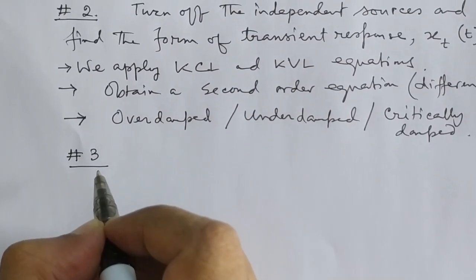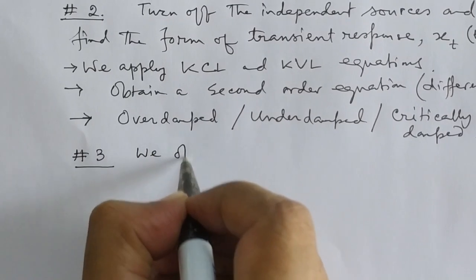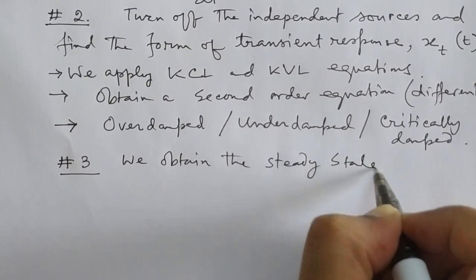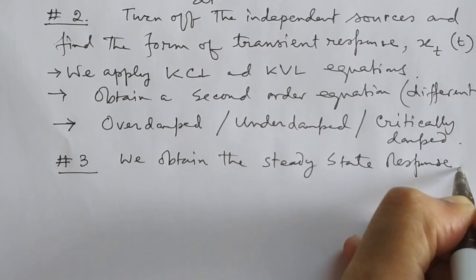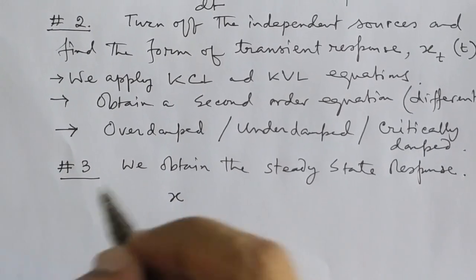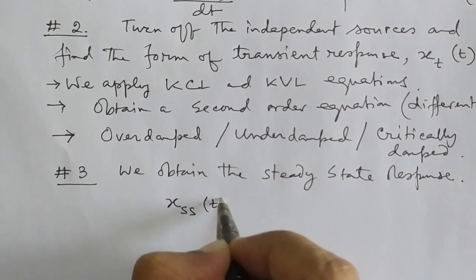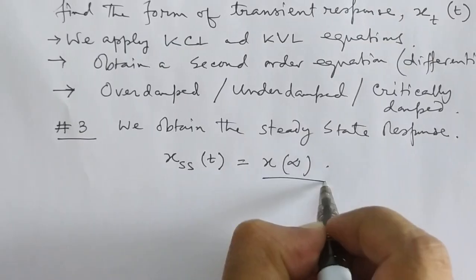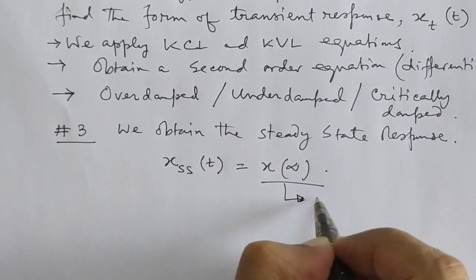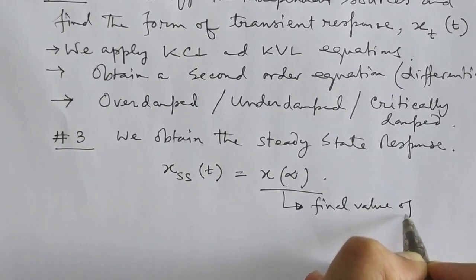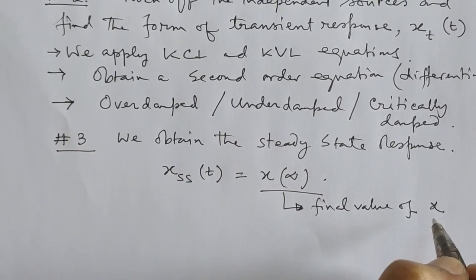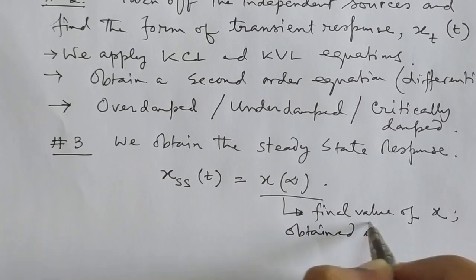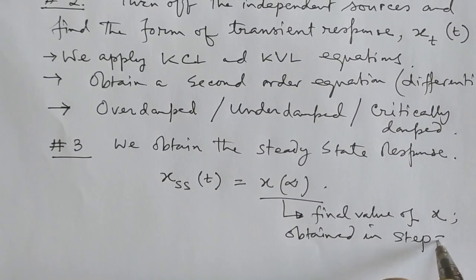In step three, we obtain the steady-state response. We denote the steady-state response by X subscript SS as a function of T, which is equal to X at time T equal to infinity — the final value of X that we obtained in step number one.